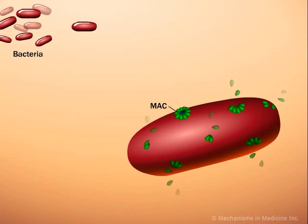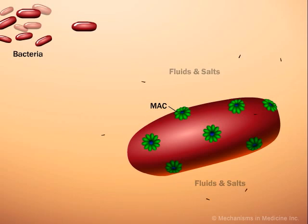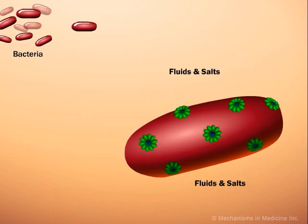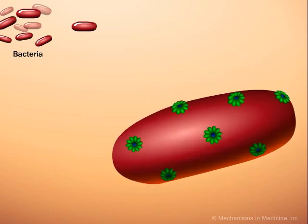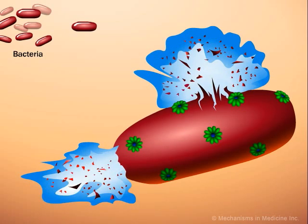Membrane attack complexes make the bacterial membrane porous, and the rapid influx of fluid results in bacterial cell death.